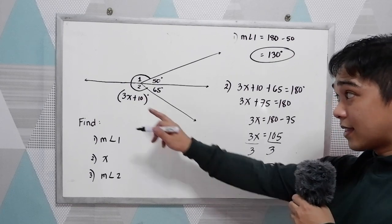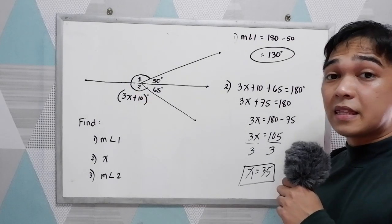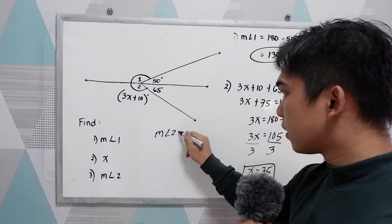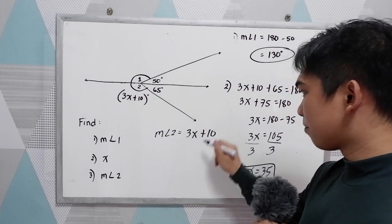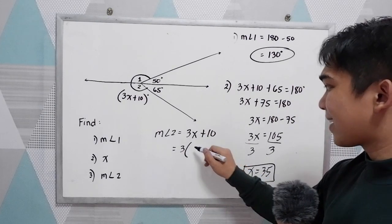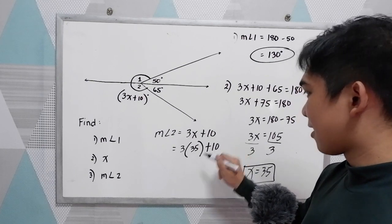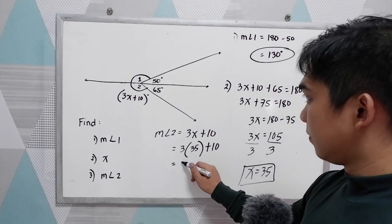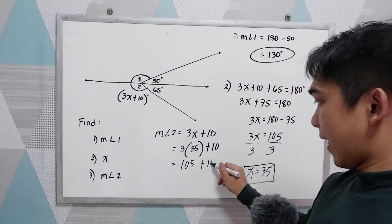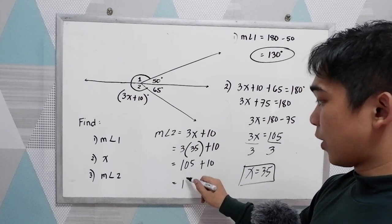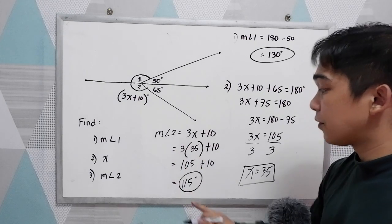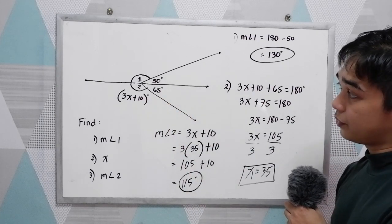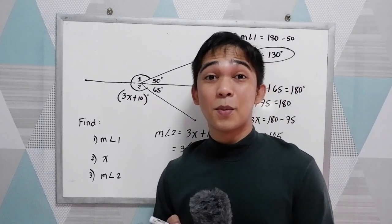Now we have a value for x, so we can find angle 2. Measure of angle 2 equals 3x plus 10. Substituting x equals 35: 3 times 35 is 105, plus 10 equals 115. So the measure of angle 2 is 115 degrees. To check: 115 plus 65 equals 180 degrees. They are supplementary angles.